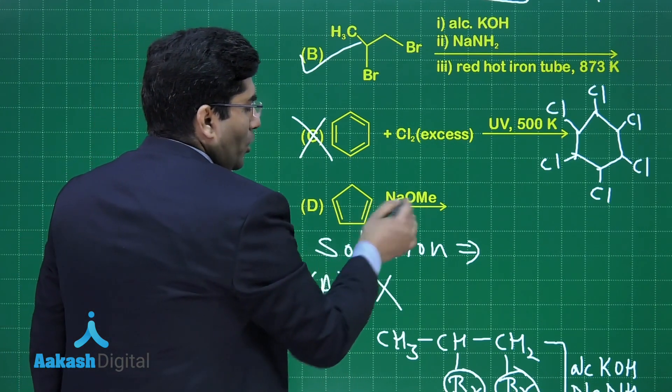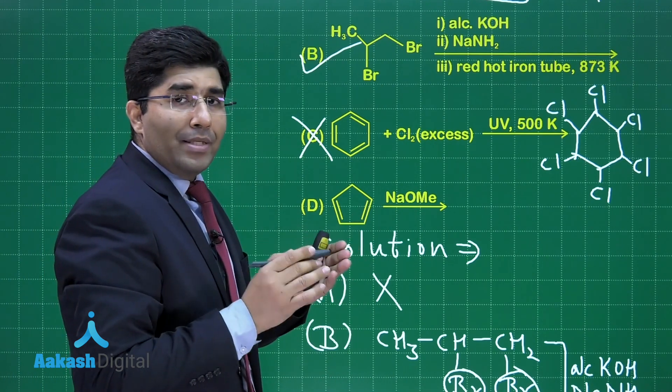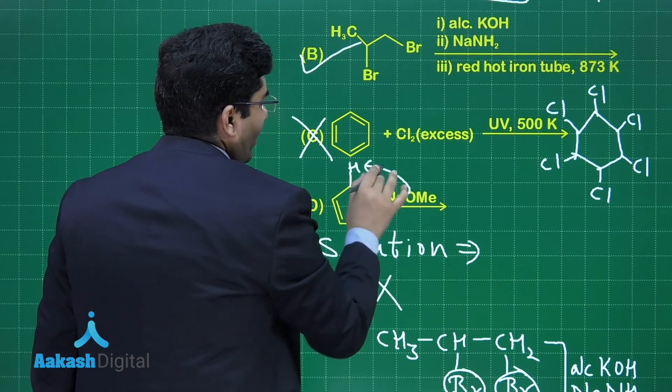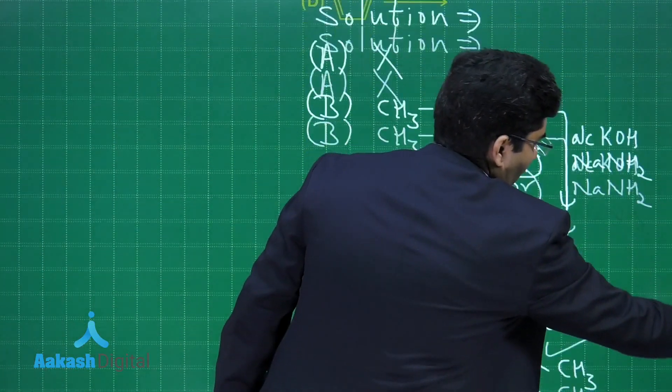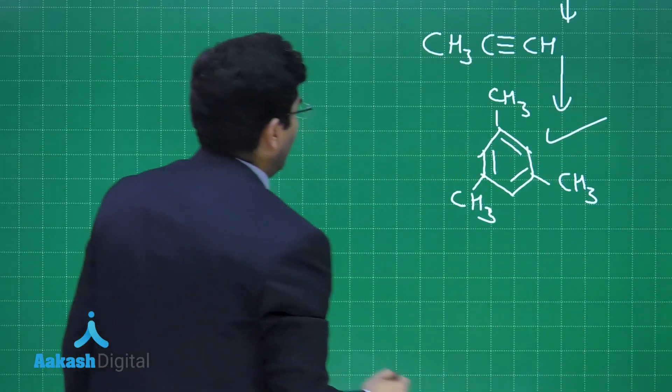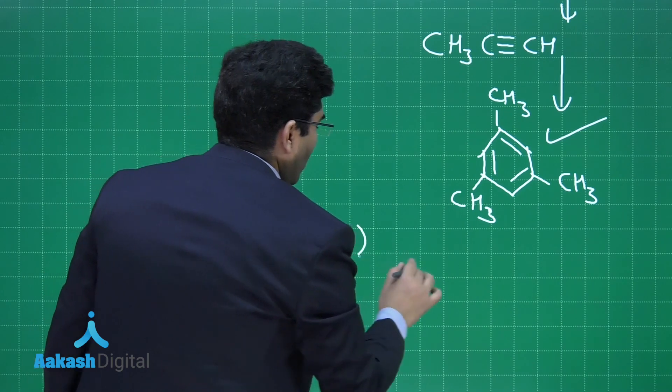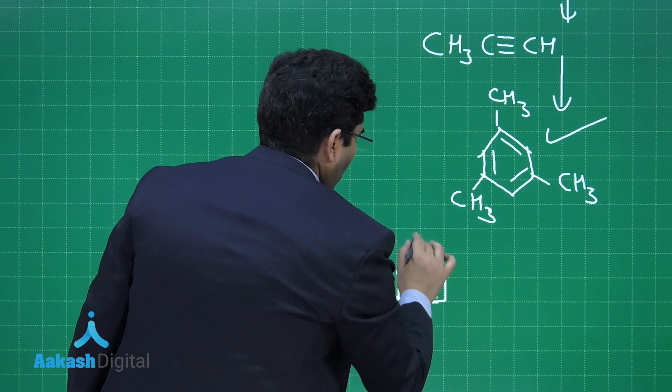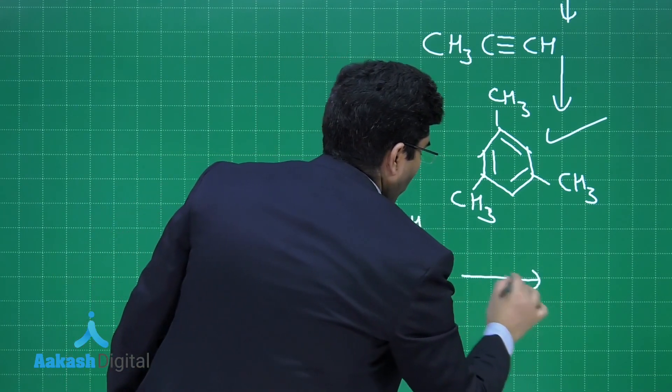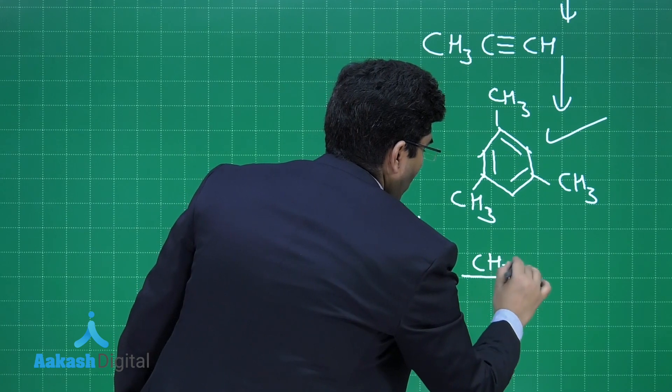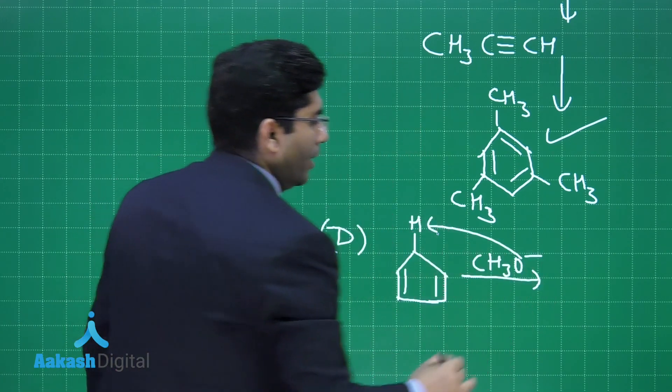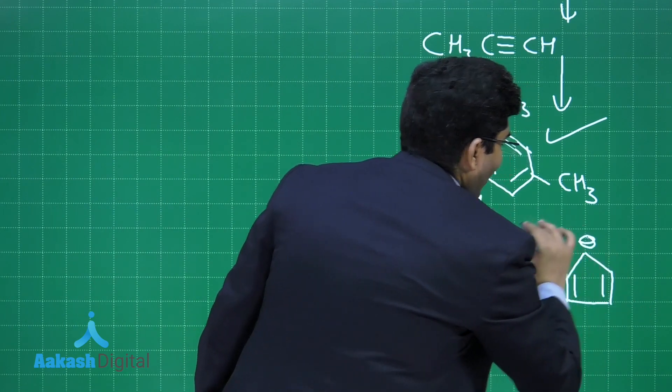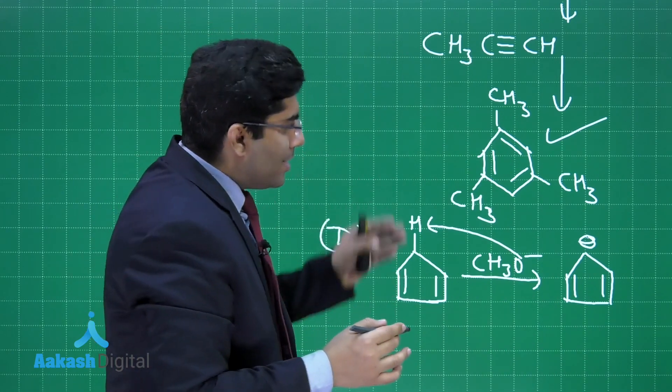Talking about the last one, sodium methoxide will produce a base, the methoxide ion. Methoxide ion will attack on this hydrogen atom and take away the hydrogen ion. If you write the complete reaction, then in the case of D, we will get CH₃O⁻. It will attack here and we will get cyclopentadienyl carbon ion, and this is aromatic.